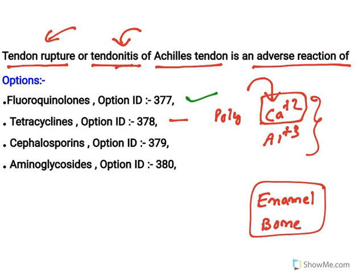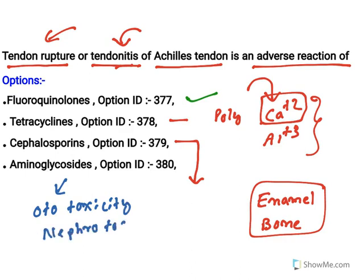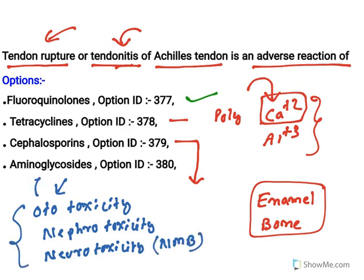Cephalosporins' very common adverse effects are nausea, emesis, and diarrhea. In the case of aminoglycosides, the adverse effects are ototoxicity, nephrotoxicity, and neurotoxicity — neurons will also get damaged, especially neurotoxicity related to neuromuscular blockade. So the question is about tendon rupture and tendonitis, and the answer is fluoroquinolones.